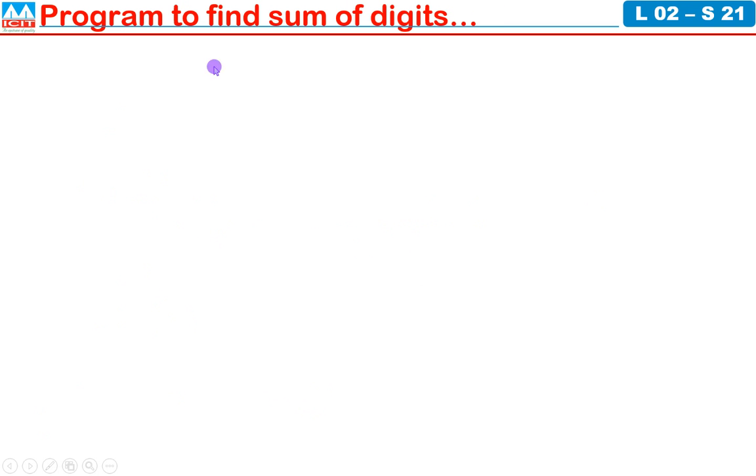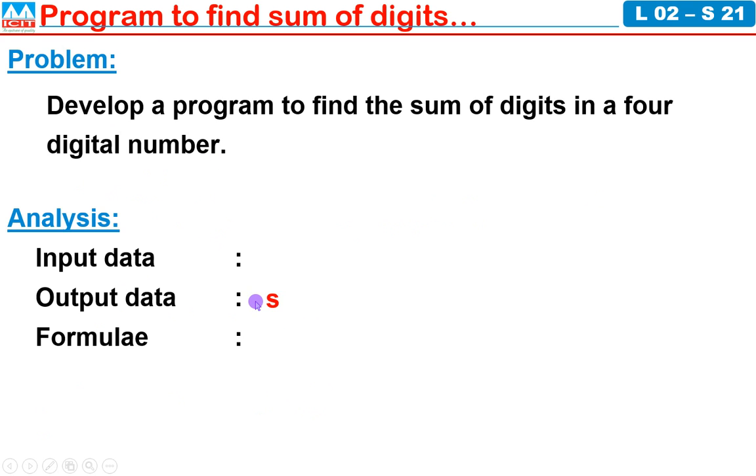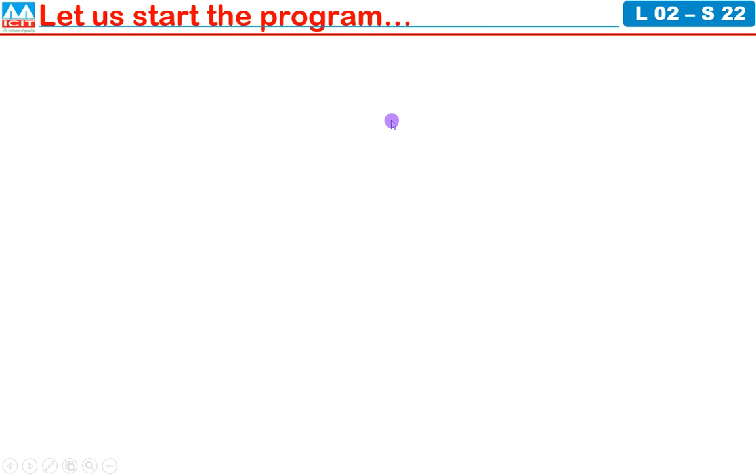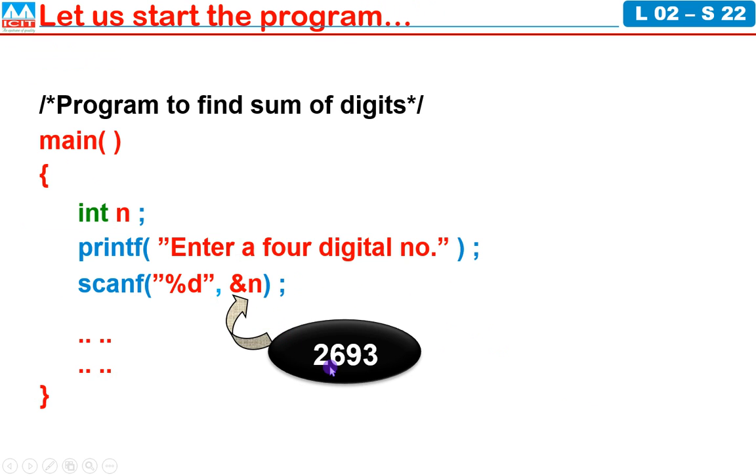Program to find sum of digits. Let us take the problem. Develop a program to find sum of digits in a 4 digital number. So output is sum of digits S equals D1 plus D2 plus D3 plus D4. D1, D2, D3, D4 and input N. We need to separate each digit from N. So what should be input N? Let's start the program. Program begins with main, open brace, then printf Enter 4 digital number, scanf percentage d address of N. You need to define the variable N and write the comment. Now at the time of execution, if I give the input 2693, 2693 will be passed to variable N.